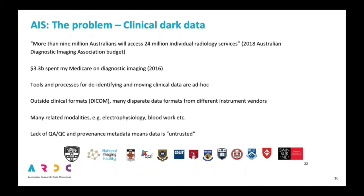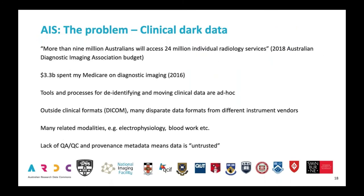I'll be talking about the Australian Imaging Service, which focuses on image characterization but differently to ACCS — much more on clinical dark data. Roughly one third of the Australian population gets radiology images every year, and about $3.3 billion is spent obtaining these images. To put that in perspective, that's about four years' worth of cumulative NHMRC funding for the entire country. This project aims to facilitate easier use of that clinical data for research purposes.